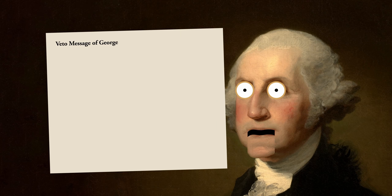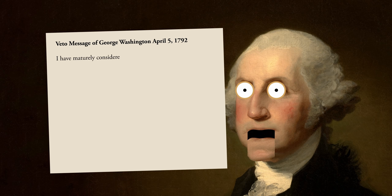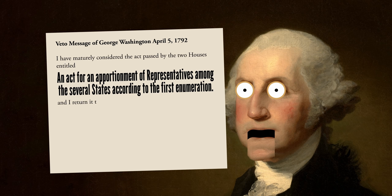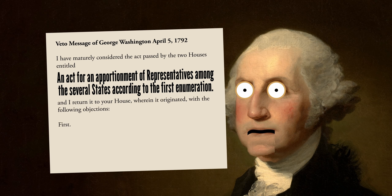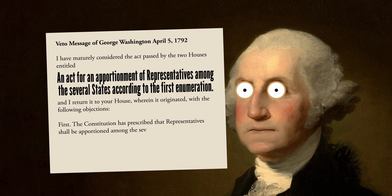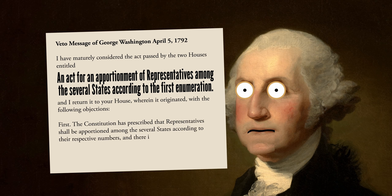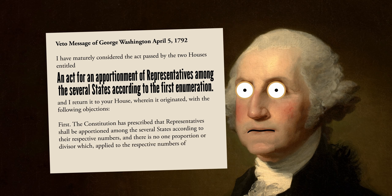Veto message of George Washington, April 5th, 1792. 'I have maturely considered the act passed by the two houses, and I return it to your house wherein it originated with the following objections. First, the Constitution has prescribed that representatives shall be apportioned among the several states according to their respective numbers, and there is no one proportion or divisor which, applied to the respective numbers of the states, will yield the number and allotment of representatives proposed by the bill.'